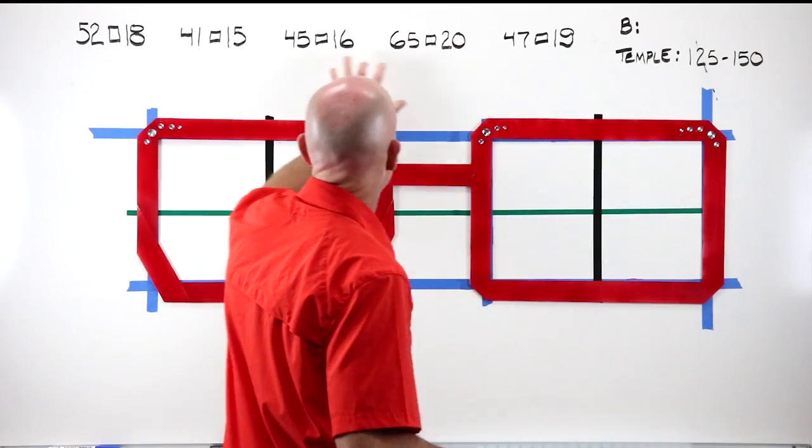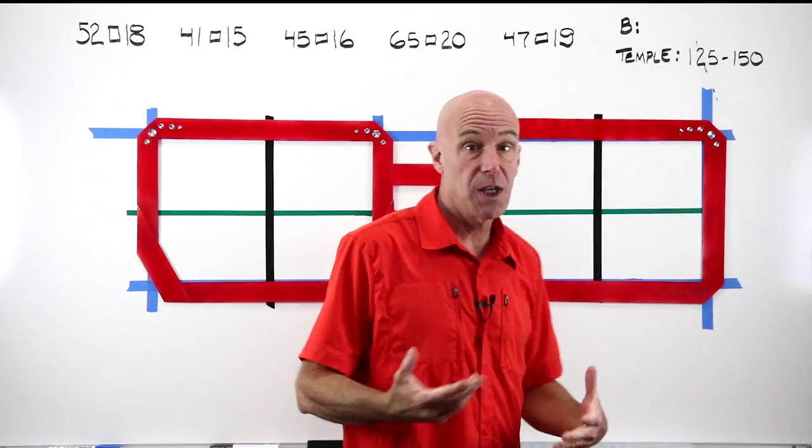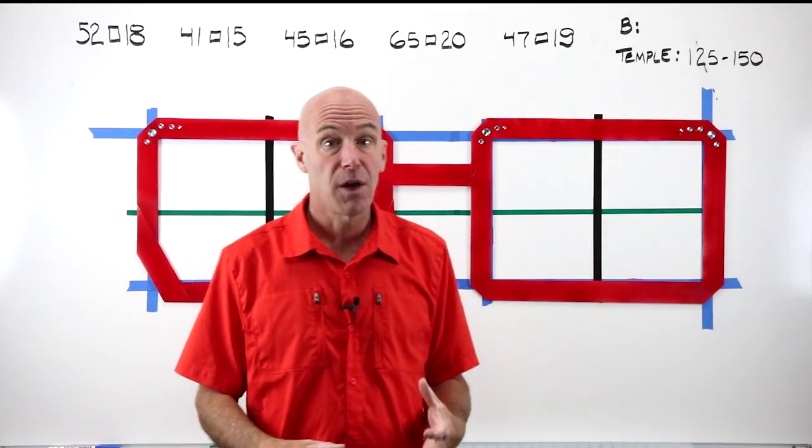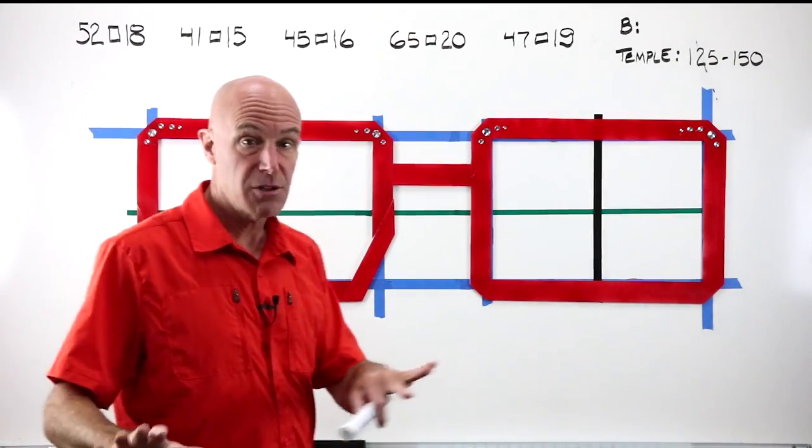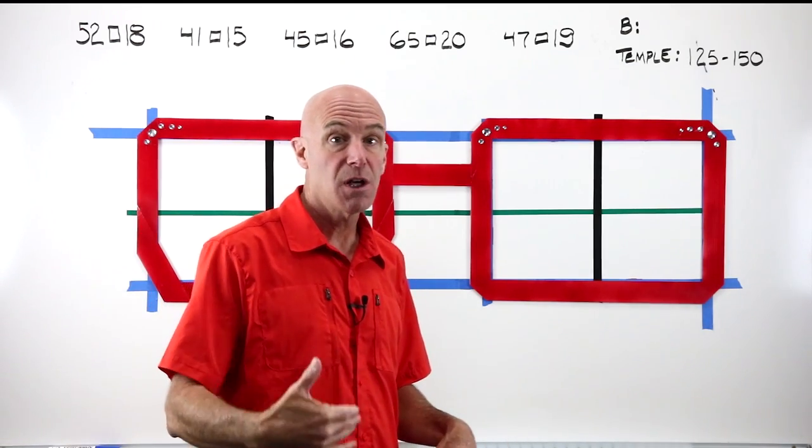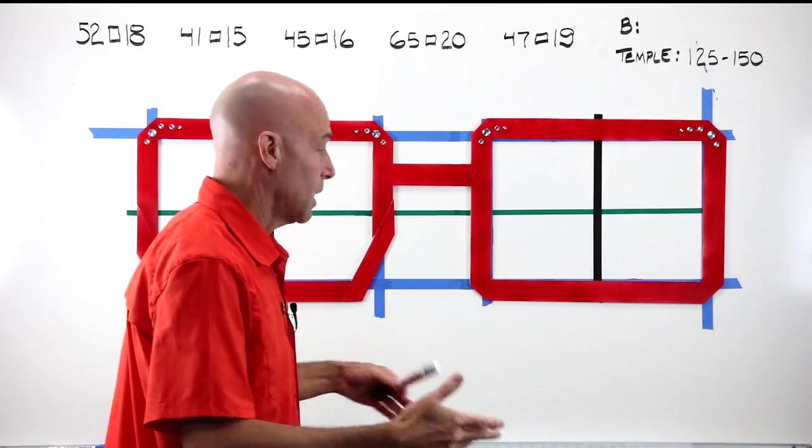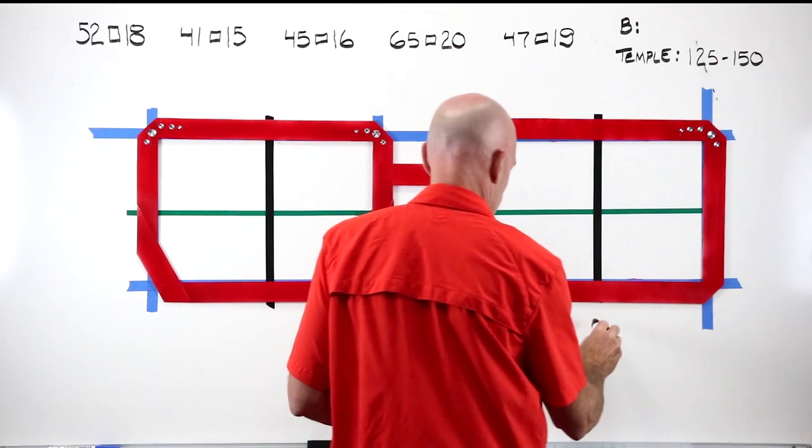Where does that first number come from? It is considered the frame eye size or the frame A. It is, for frame sizing purposes, the longest horizontal measurement in the eye wire opening.